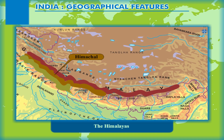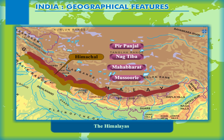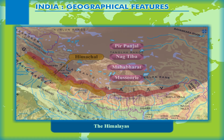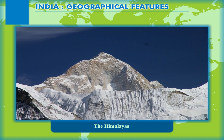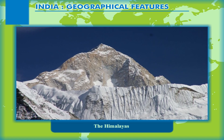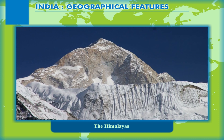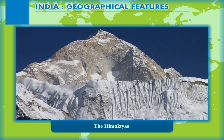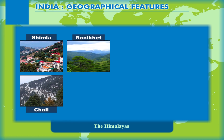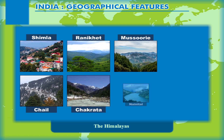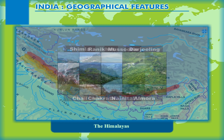The Middle or Lesser Himalayas, or Himachal, lies in the middle among the three parallel ranges and is lower than the Greater Himalayas. The Pirpanjal, Nagteba, Mahabharat, and Mussoorie ranges all are a part of the Middle Himalayas. This range also has some snow-capped peaks. The Middle Himalayas are a great tourist attraction with several hill stations like Shimla, Chail, Ranikhet, Chakrata, Mussoorie, Nainital, Almora, and Darjeeling.